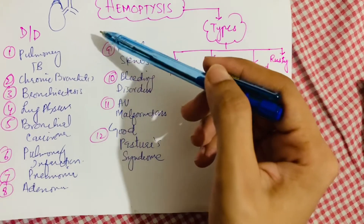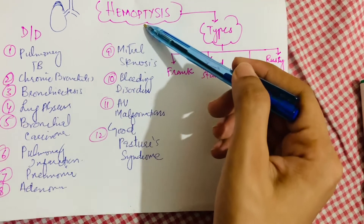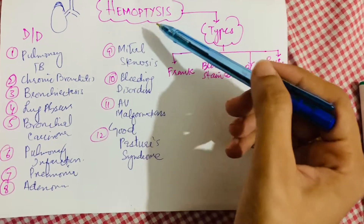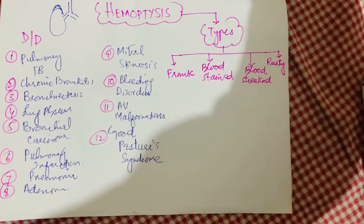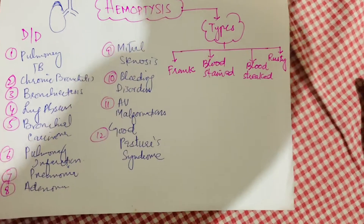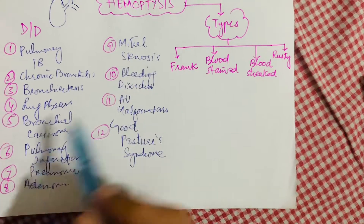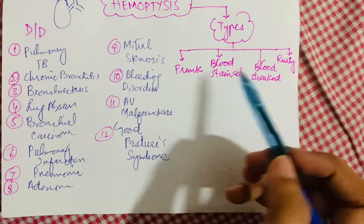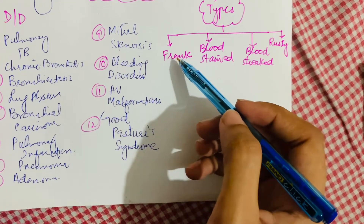The blood may be mixed with sputum or air, and the patient should be asked about the type, degree, frequency, and duration of the hemoptysis. There are four basic types of hemoptysis: frank hemoptysis, blood-stained hemoptysis, blood-streaked hemoptysis, and rusty hemoptysis.